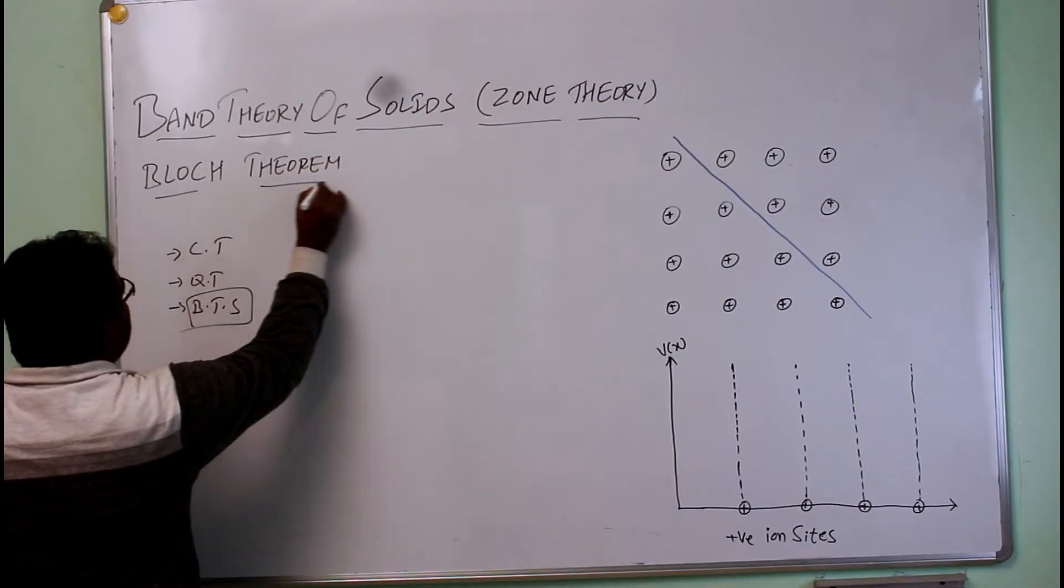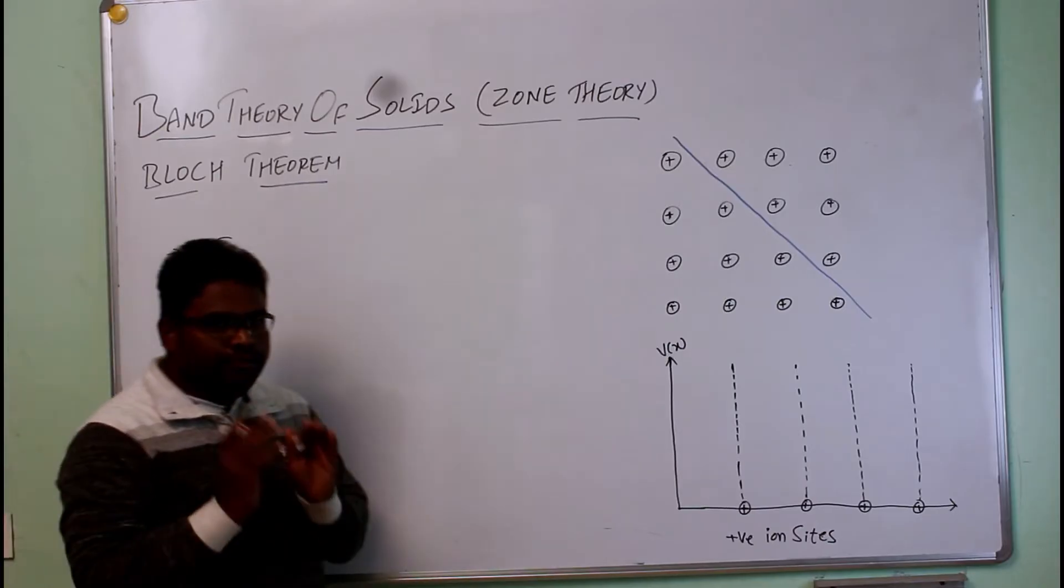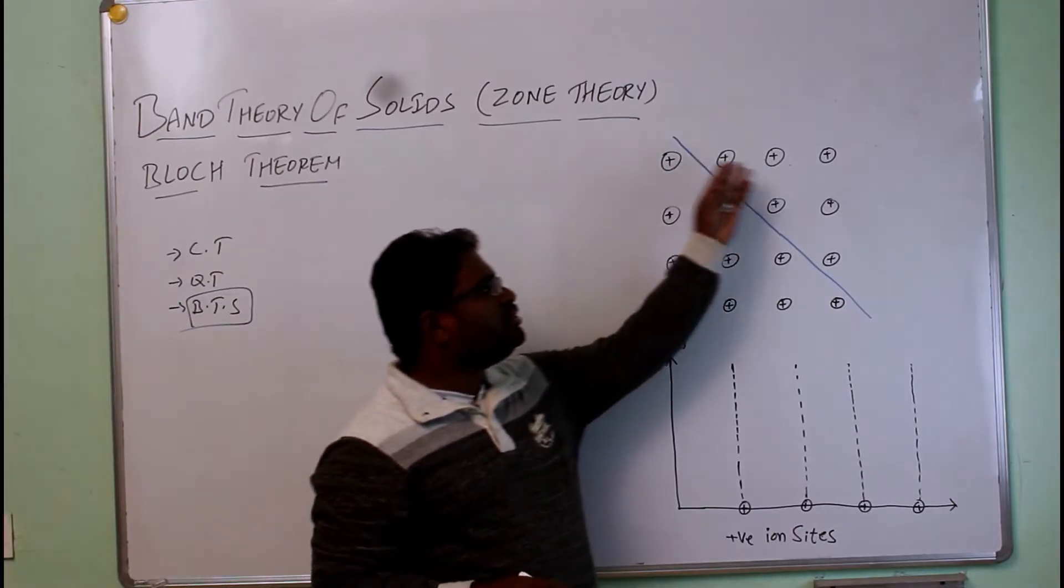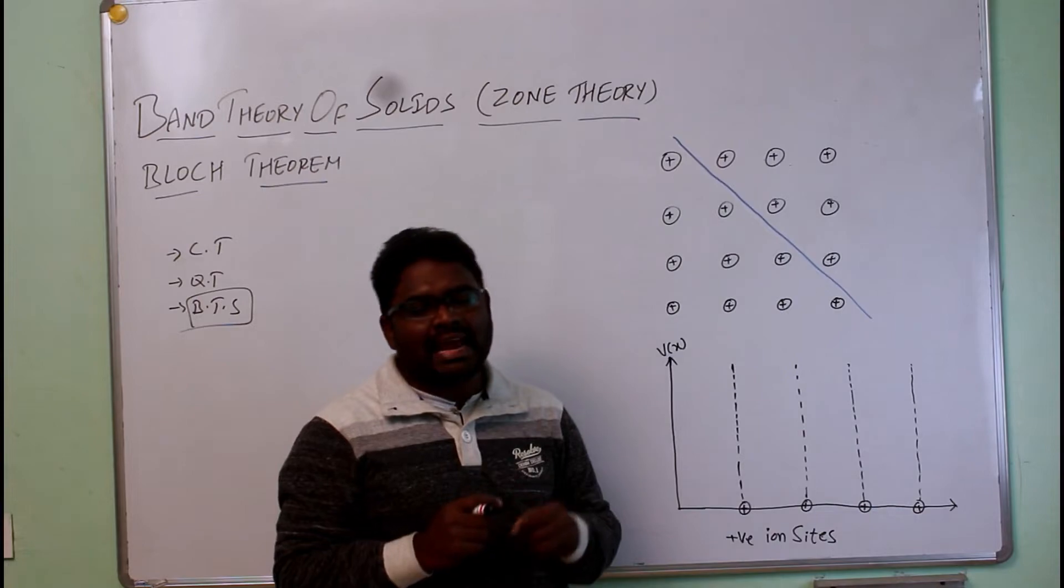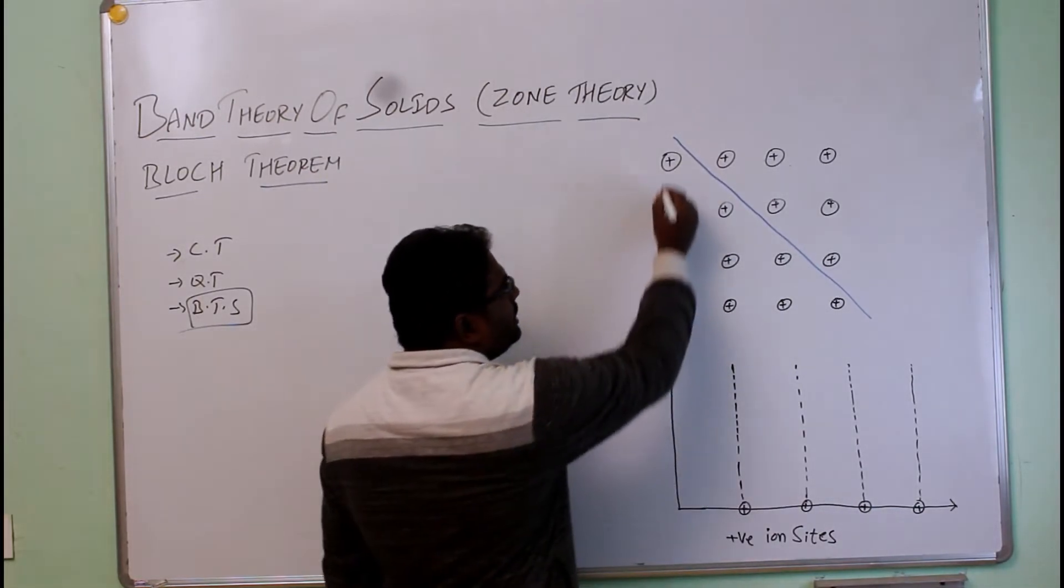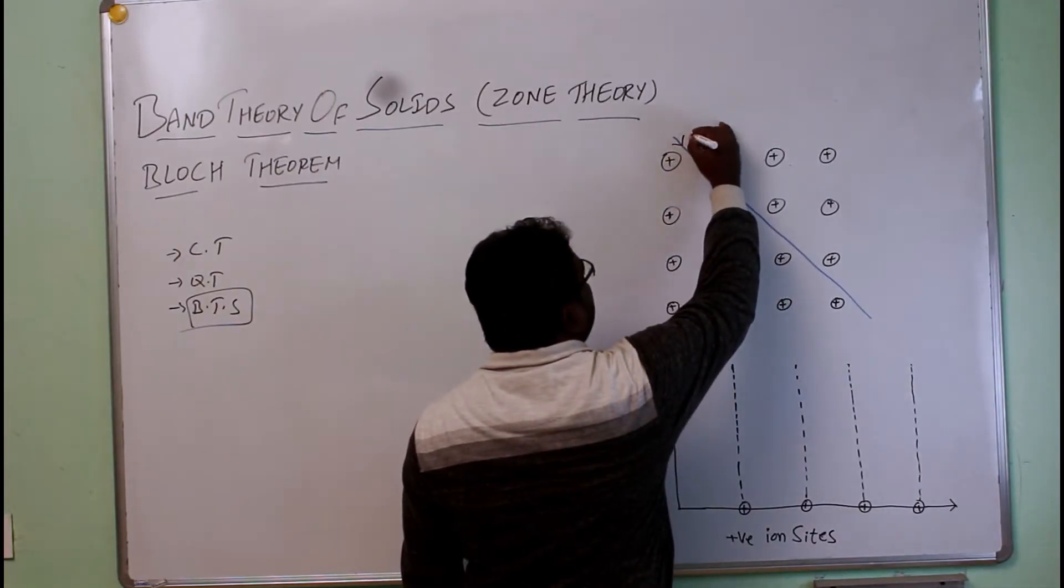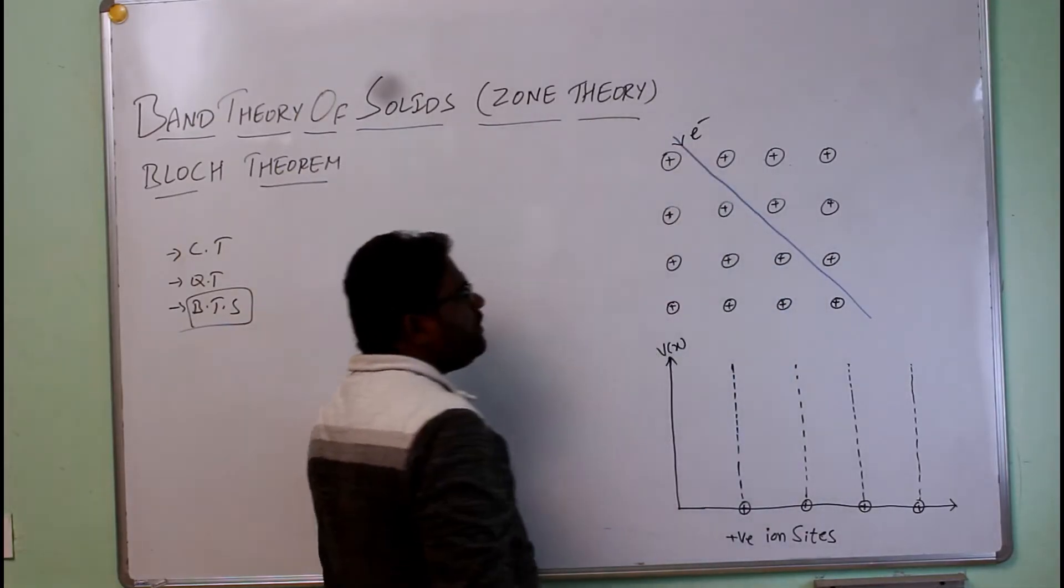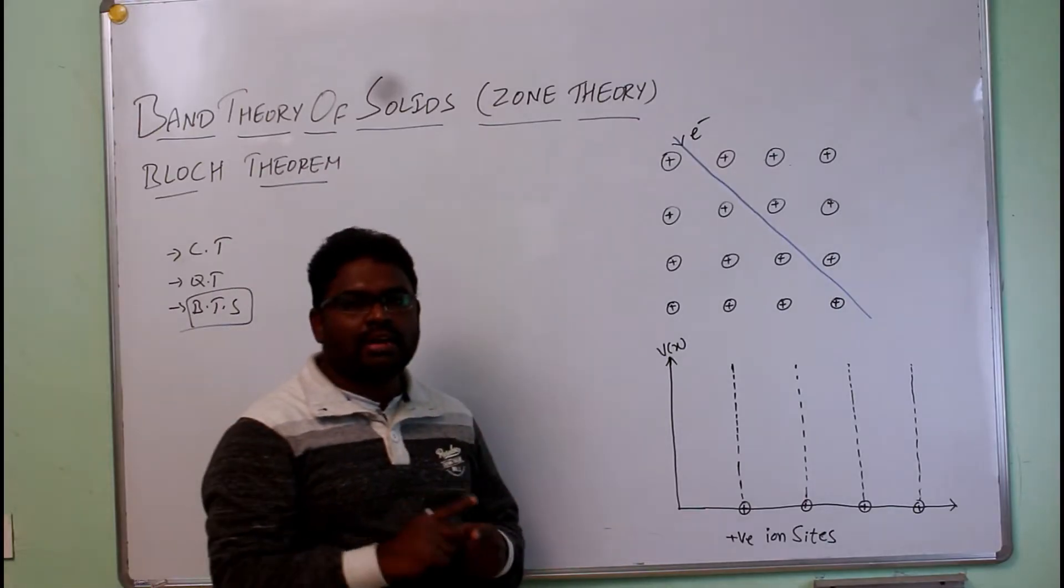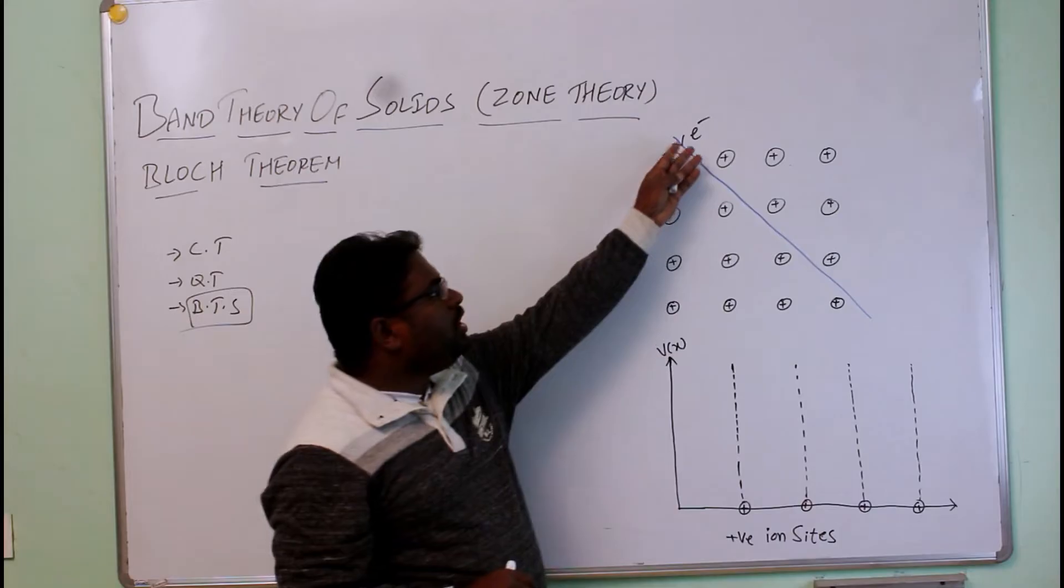According to Bloch theorem, if you take any metal, it is a combination of positive ion sites - a lattice arrangement, a periodic arrangement. These are all about the lattice ion sites through which the electrons can travel. Based on the travel of electrons, one can decide whether the metal is semiconductor or conductor or insulator.